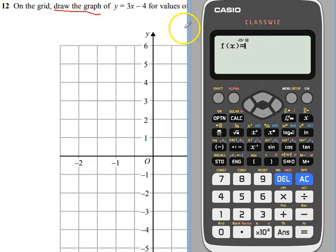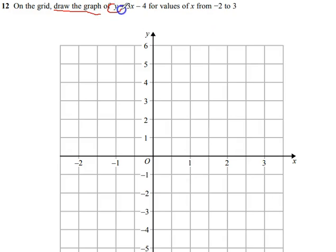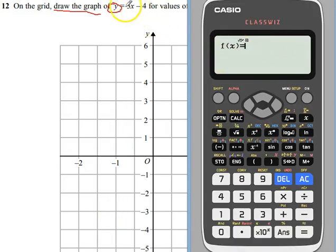And you'll see it says f of x, that is instead of the y equals. So imagine that y is the f of x, then it equals. And then just type in, as it says, 3. Now on this calculator, I have an x button, minus 4.